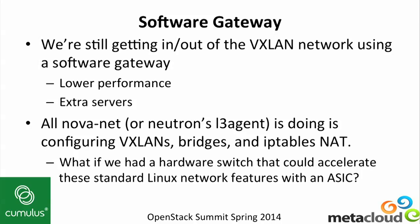Now we can have all these VMs talking through an ECMP network using tons of bandwidth, solving all those locality problems. But we still have one problem: we're going through a software gateway to get to the outside world. All traffic to or from the internet or physical devices — load balancers, routers, firewalls — has to go through a Linux box running fairly standard Linux tools configured by Nova Network or Neutron's L3 agent. What it's really doing is configuring VXLAN interfaces, adding bridges to bridge them to front panel ports, and configuring NAT for floating IP addresses using iptables.